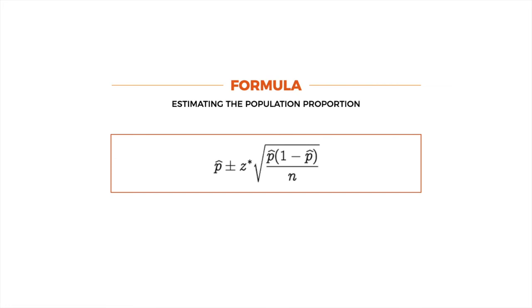We have learned how to estimate the population mean using the Z or T statistic. Next, we look at estimating the population proportion. The population mean gives an actual number, while the population proportion gives a percentage of that population. This is useful for marketers looking at market share. The formula for estimating the population proportion is: P-hat plus or minus Z multiplied by the square root of P-hat times Q-hat over N, where Q-hat equals 1 minus P-hat.